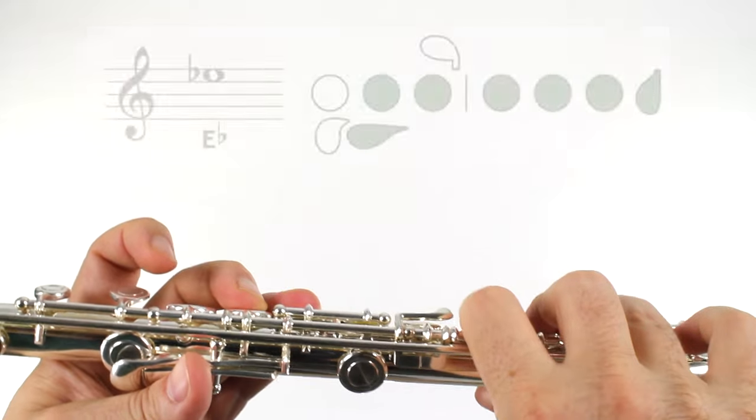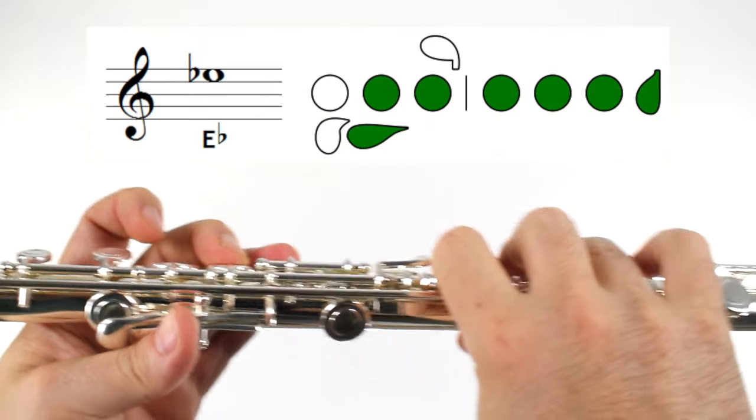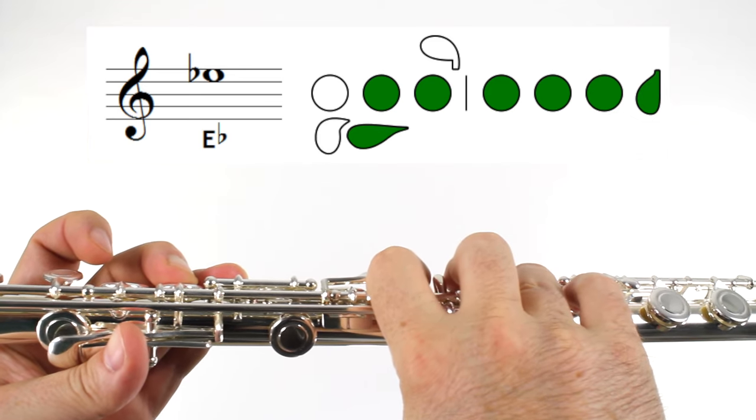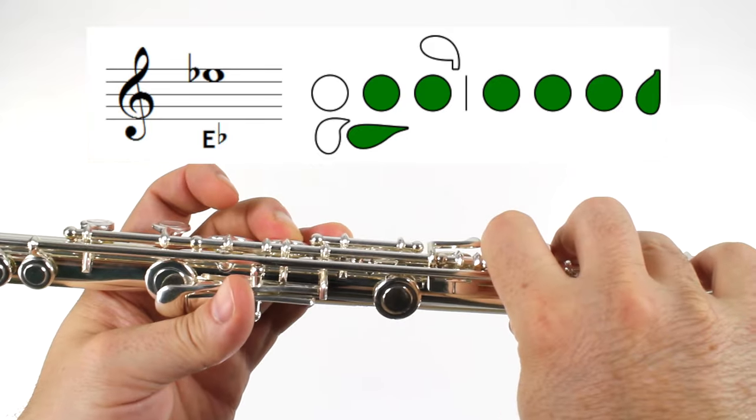To play E-flat, if we look at our E-flat fingering chart, it's kind of cool. We only have to add one finger. We take our right hand pinky and press down the home key for our right hand pinky right here, and that makes an E-flat.